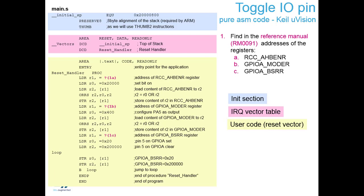Now we need to fill in the three register address labels — 1a, 1b, and 1c — highlighted in our code. To do this, we open the reference manual (RM_STM32F072) from the user disk documentation folder and find the addresses of these three registers.